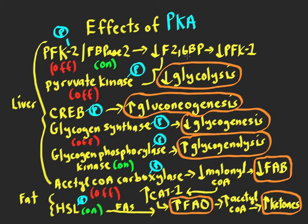When fructose 2,6-bisphosphate decreases, that also turns on the gluconeogenic enzyme fructose bisphosphatase 1. So one mechanism of turning off glycolysis is turning off the production of a glycolytic allosteric activator. Another mechanism of PKA is that it phosphorylates pyruvate kinase, knocking out the final step of glycolysis, preventing PEP from going to pyruvate and forcing things back into the gluconeogenic pathway. PKA thus turns off glycolysis in the liver by affecting steps three and ten.